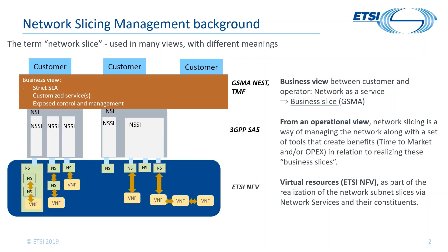If we want to understand network slicing and how these terms are used differently across standards fora, it's best to understand these views. Starting with GSMA, their network slicing task force has clarified it from a business view perspective. A business slice, as they define it, is tailored to use cases such as vehicular applications, smart factory, and so forth. Technical slices, on the other hand, have different technical characteristics such as low latency, bandwidth focus, low cost, low resource requirements, or ultra-reliable with high availability.